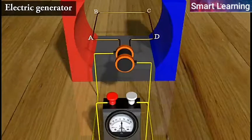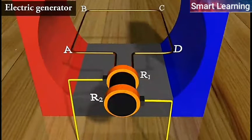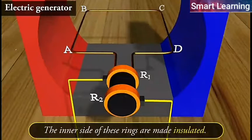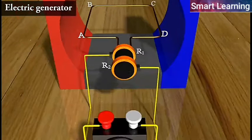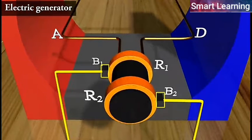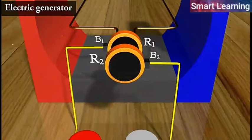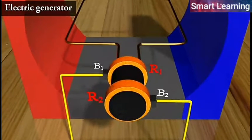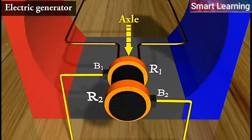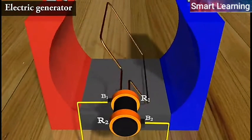The two ends of this coil are connected to the two rings R1 and R2. The inner side of these rings are made insulated. The two conducting stationary brushes B1 and B2 are kept pressed separately on the rings R1 and R2 respectively. The two rings R1 and R2 are internally attached to an axle.